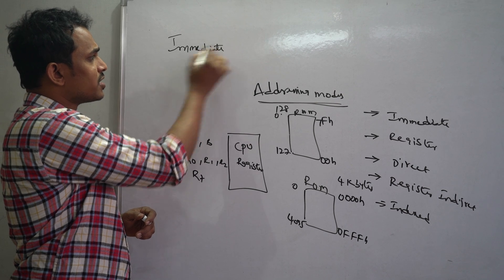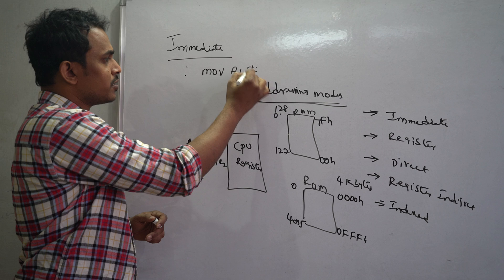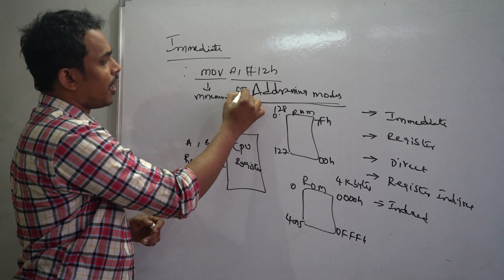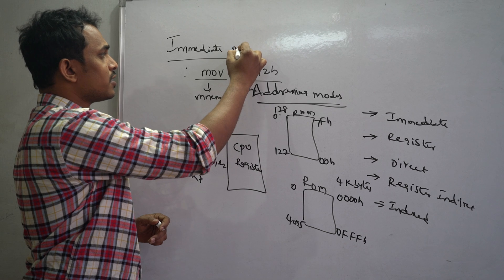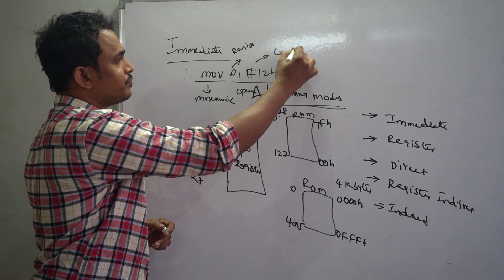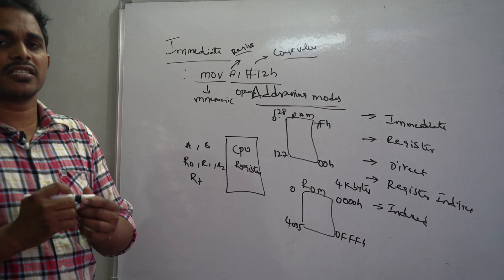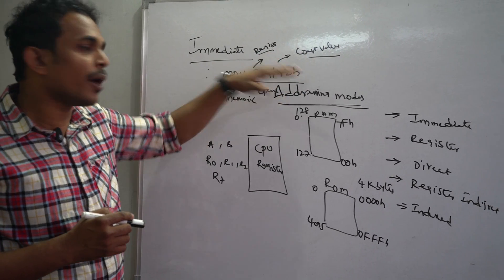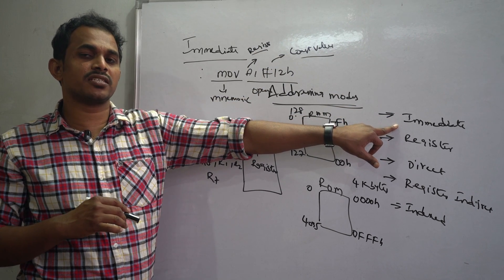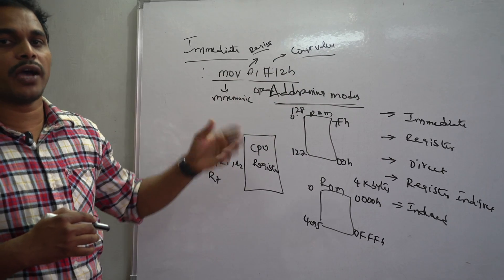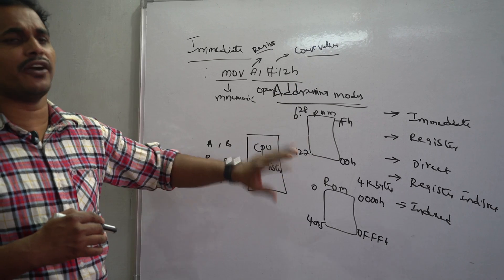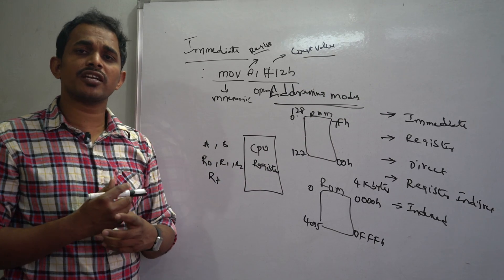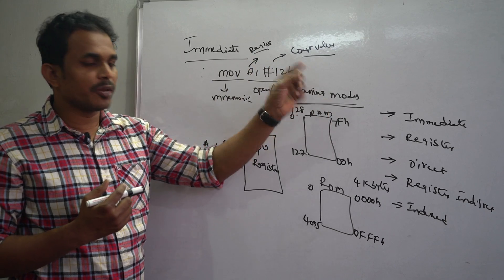For the immediate addressing mode syntax, consider the instruction MOV A, #12H. Here MOV is the mnemonic and A and #12H are the two operands. A is a register and #12H is a constant value. When the constant value is a part of your instruction, it comes under immediate addressing mode, which supports storing a constant value into a register or memory location.